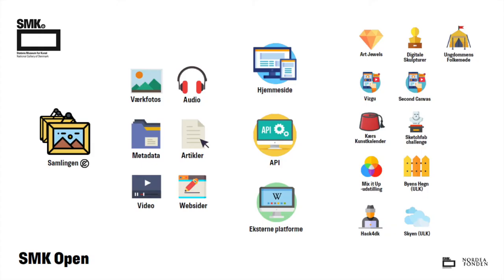This is a graphic visualization of the principle of SMK Open. Reading from left to right, we start with the CC Zero collection encompassing all the different assets, which can then be displayed on our website, through our API, and on external platforms, leading to a ton of fun and inspiring projects that other people create with our open data.